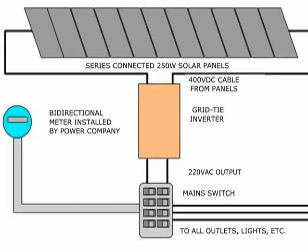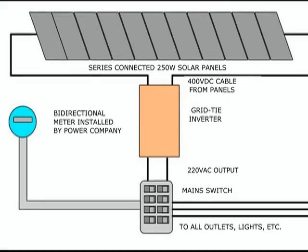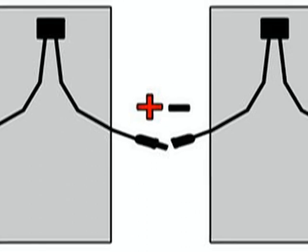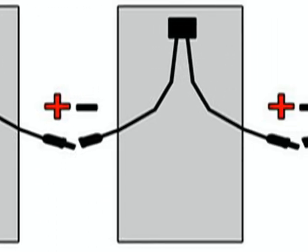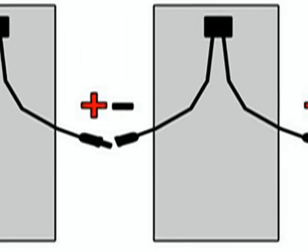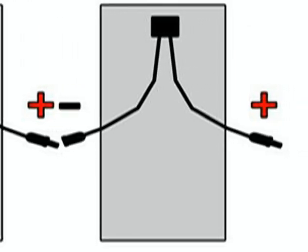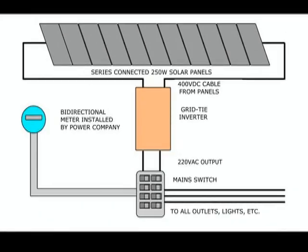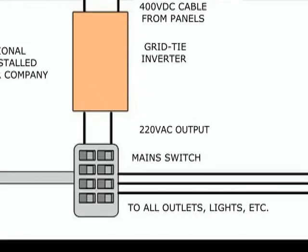It is necessary to convert DC to household AC by means of a device called an inverter, which yields AC current similar to the electricity supplied by the power company. The usual way to install a solar power plant is to wire a group of solar panels in series and send the resulting DC to a central inverter, also called a string inverter, placed indoors.